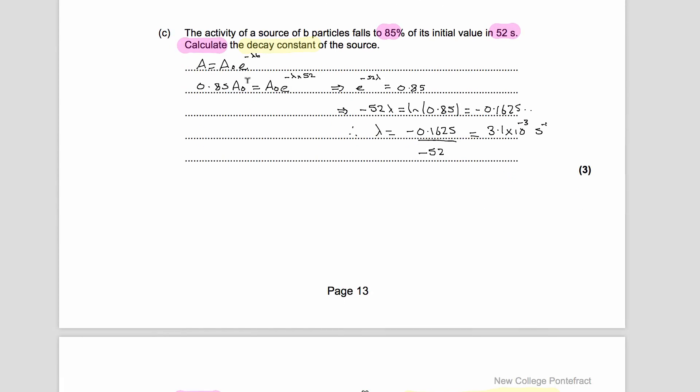In part C, we're told that the activity of a source of particles falls to 80 percent of its initial value in 52 seconds. We're asked to calculate the decay constant of the source. So we use the only thing we can really use if we're talking about time and count rates and activities falling, which is the exponential equation. The activity is equal to the starting activity multiplied by e to the minus lambda t, where lambda is our decay constant and t is the time.